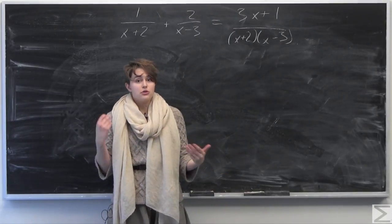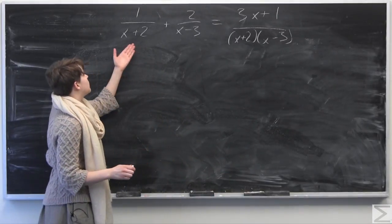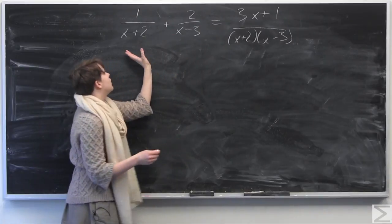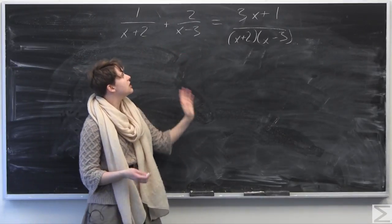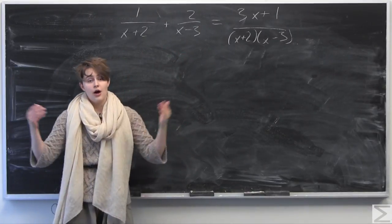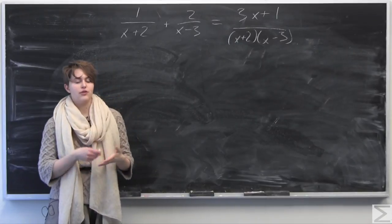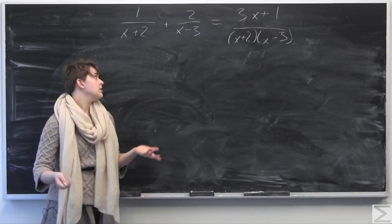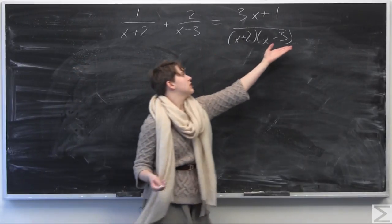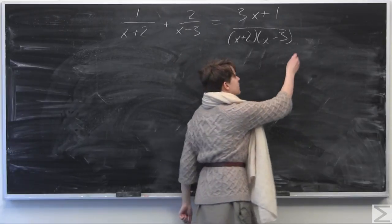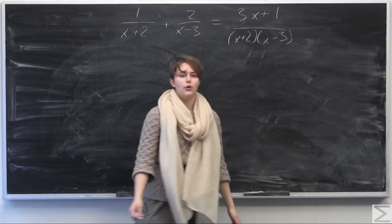You may be used to seeing expressions like this, where you have 1 over (x+2) plus 2 over (x−3), and you combine this into one fraction — you find the common denominator, add up the numerators, and get this expression on the right-hand side. That's something we're all familiar with at this point.